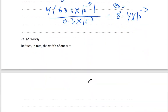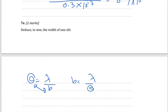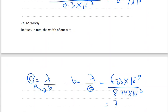Next: deduce in millimeters the width of one slit. Using θ = λ/b, I need b: swap to get b = λ/θ. Lambda is 633 × 10⁻⁹ m divided by θ = 8.44 × 10⁻³. This gives b = 7.5 × 10⁻⁵ meters.